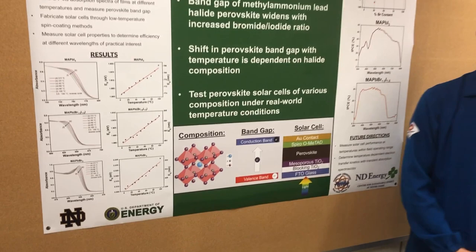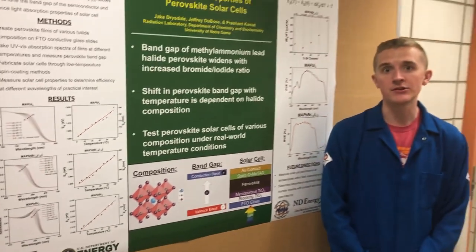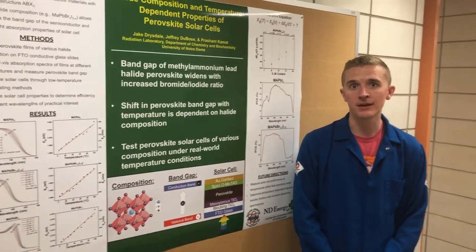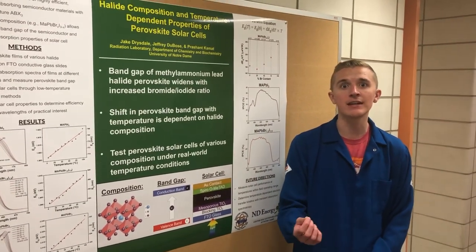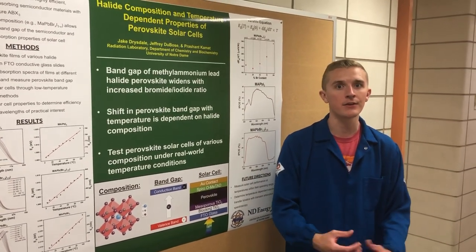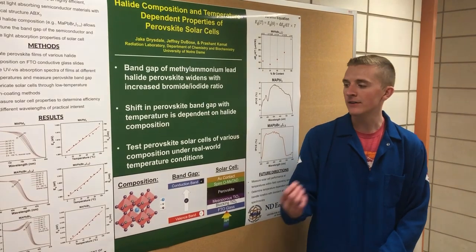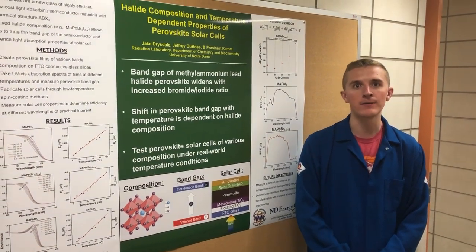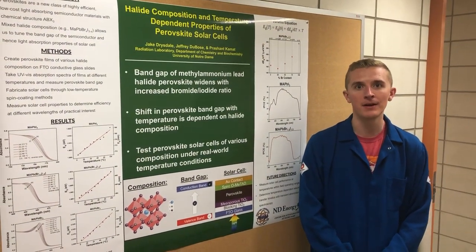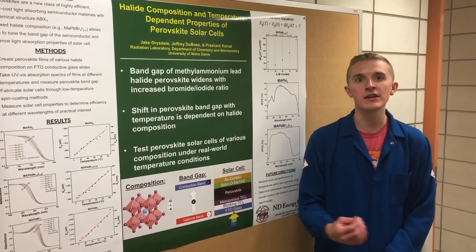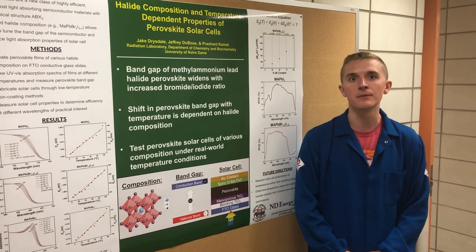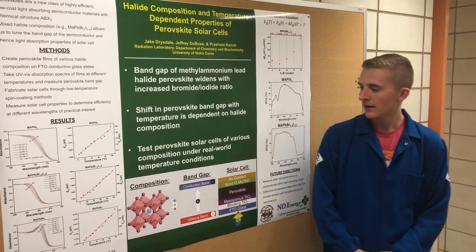We can tune the halide composition of perovskite by mixing different halides together, such as iodide and bromide, and this changes the bandgap value of our semiconductor perovskite, which changes the light absorption properties.